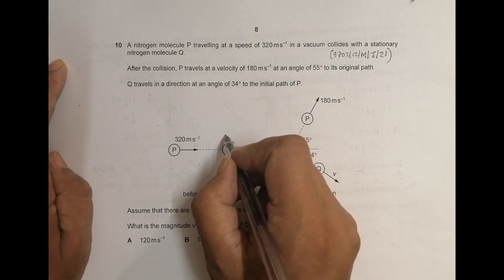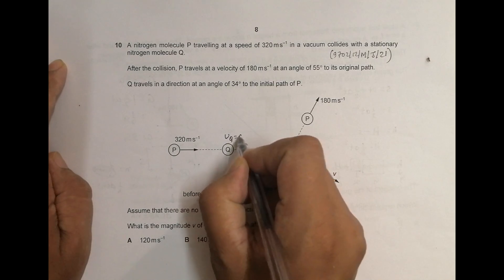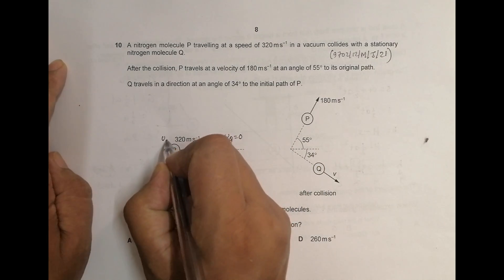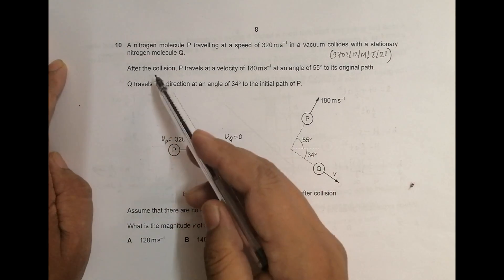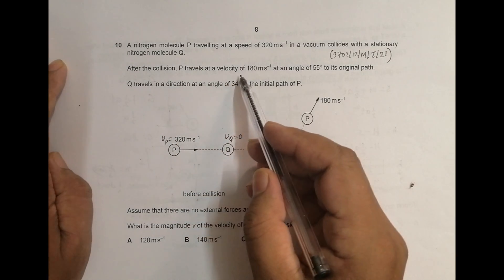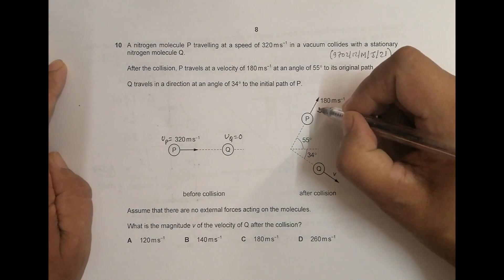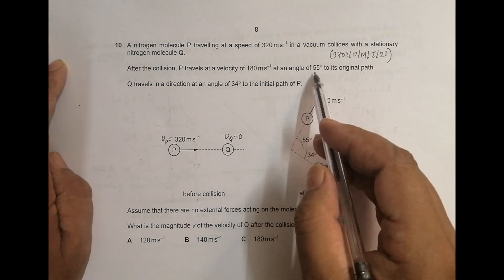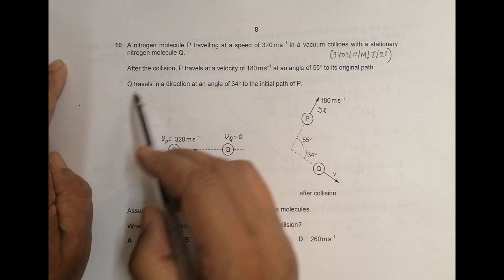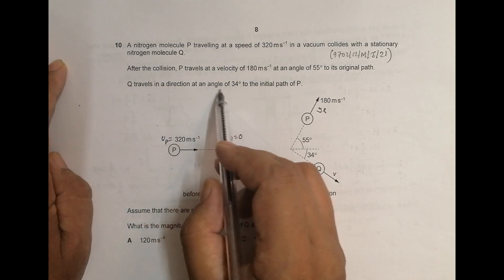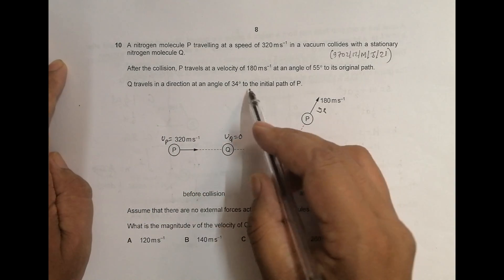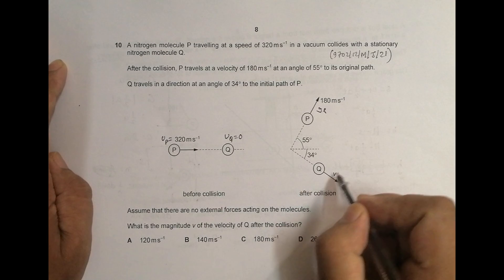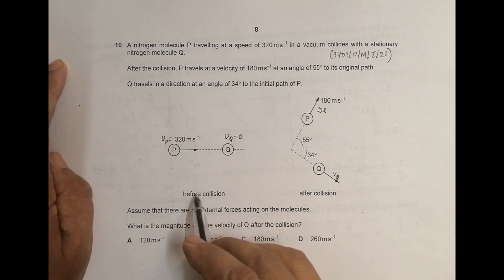So that means the velocity of this Q equal to 0 and this is U of P. After the collision, P travels at a velocity of 180 meter per second. So it is V P at an angle of 45 degree to the original path. Q travels in a direction at an angle of 34 degree to the initial path V Q. So before collision, after collision.